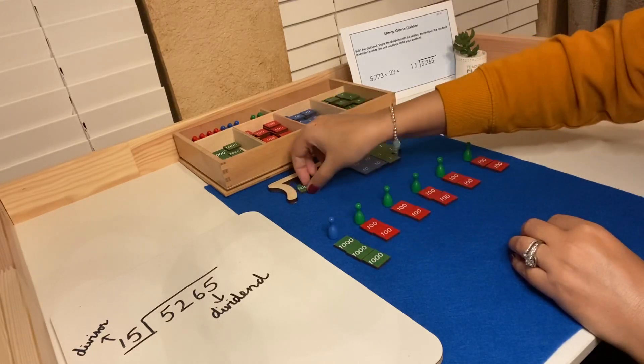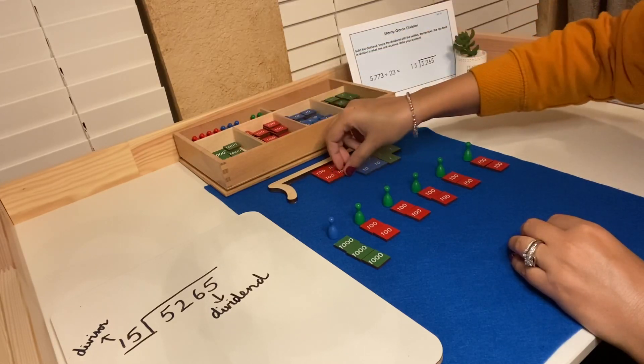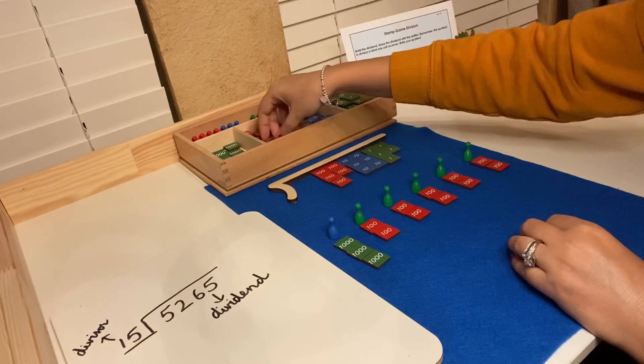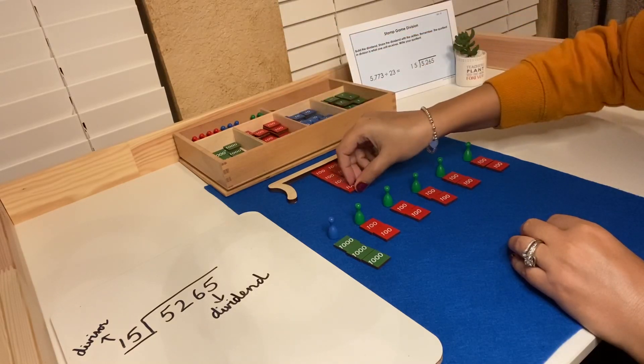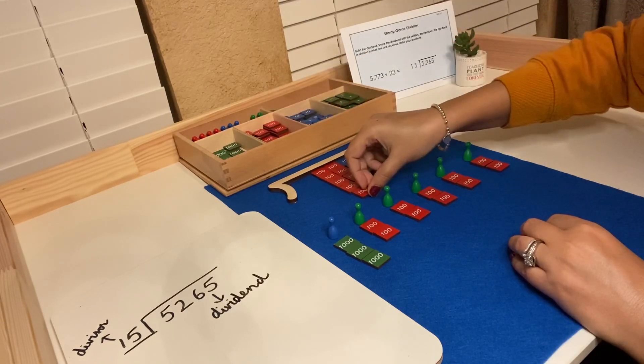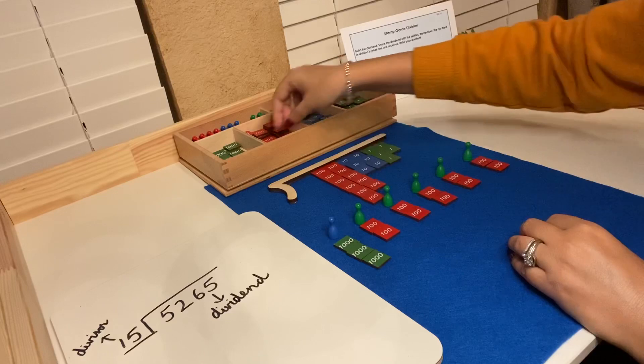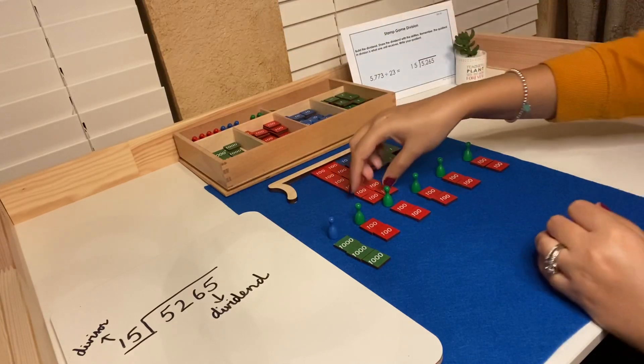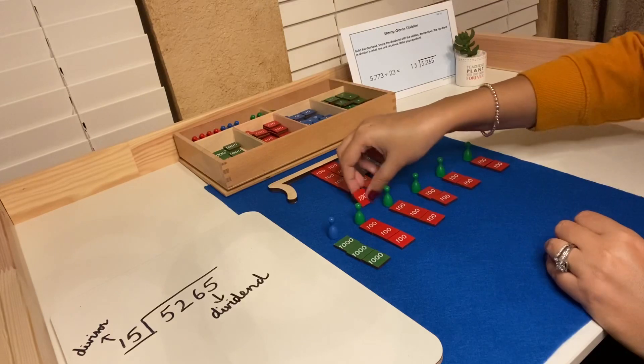I will exchange this thousand for ten hundreds. One, two, three, four, five, six, seven, eight, nine, ten. Everyone continues to receive their fair share.